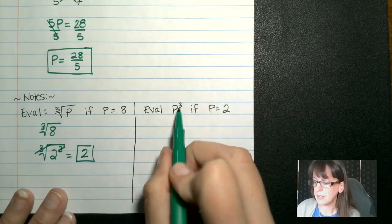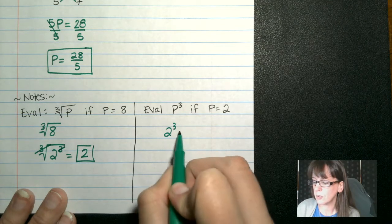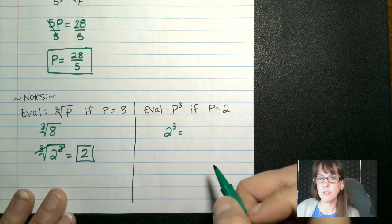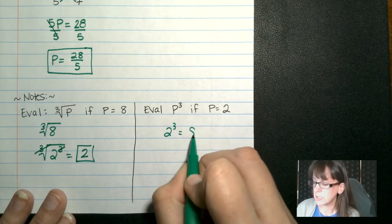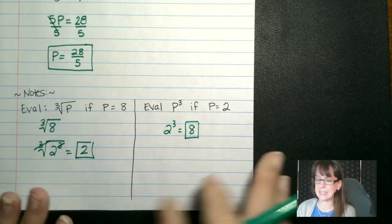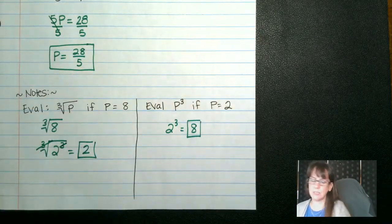Okay. So let's look at this. If we have p to the 3rd power, so that's 2 to the 3rd power, then we would have 2 times 2, which is 4 times 2, which is 8. And so our answer would be 8 there. Okay. Let's take a look at some more of these examples so you can see.